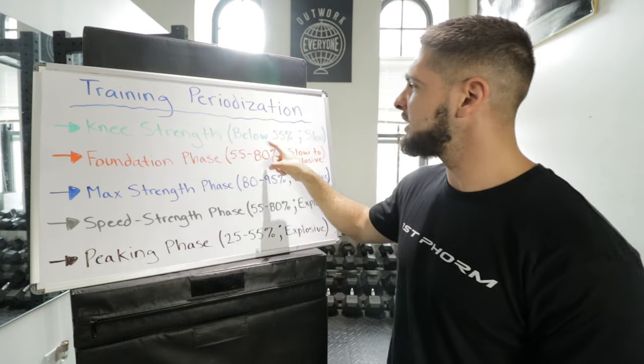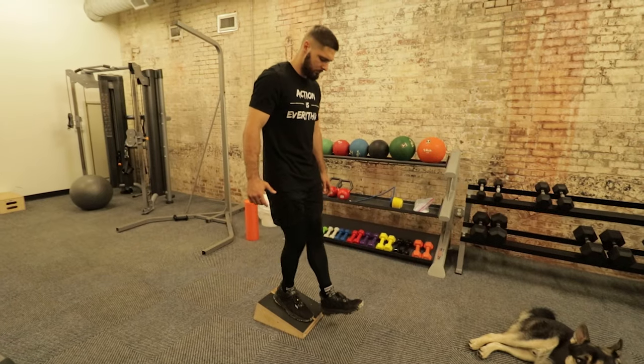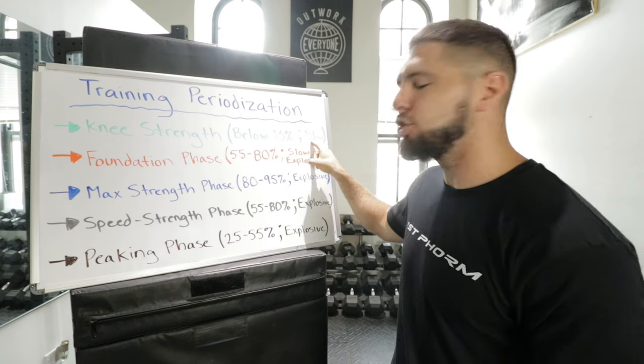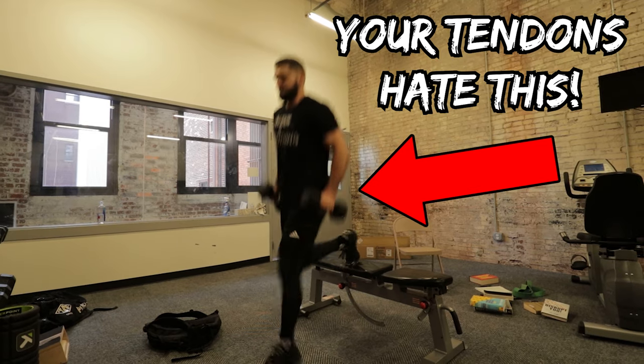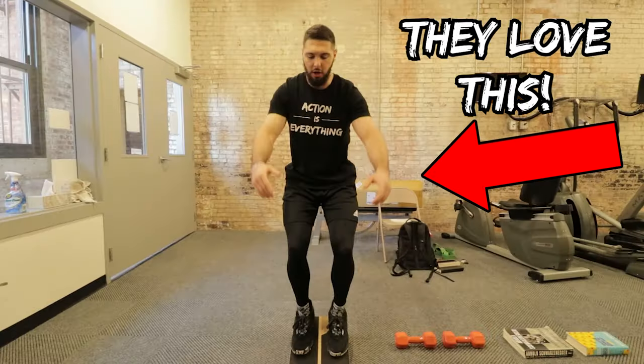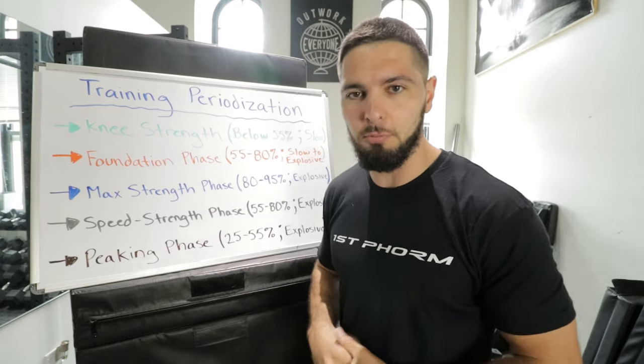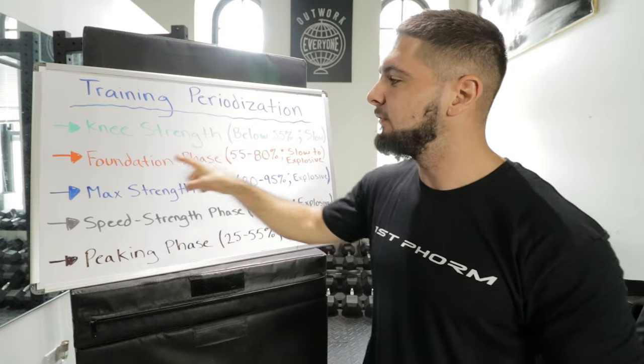For the knee strengthening phase, we use loads below 55% of your one rep max. Some athletes may need to start with bodyweight if their tendons really hurt. Once bodyweight feels okay, we move to five-pound dumbbells, then 10, 15, and 20 — but you don't increase the load if you still have pain. You wait until the pain is gone, then progressively overload to heavier weights. We also do slow movements, because tendons don't like fast, explosive, high-velocity movements. Slow eccentrics and slow concentrics heal and strengthen the tendons.